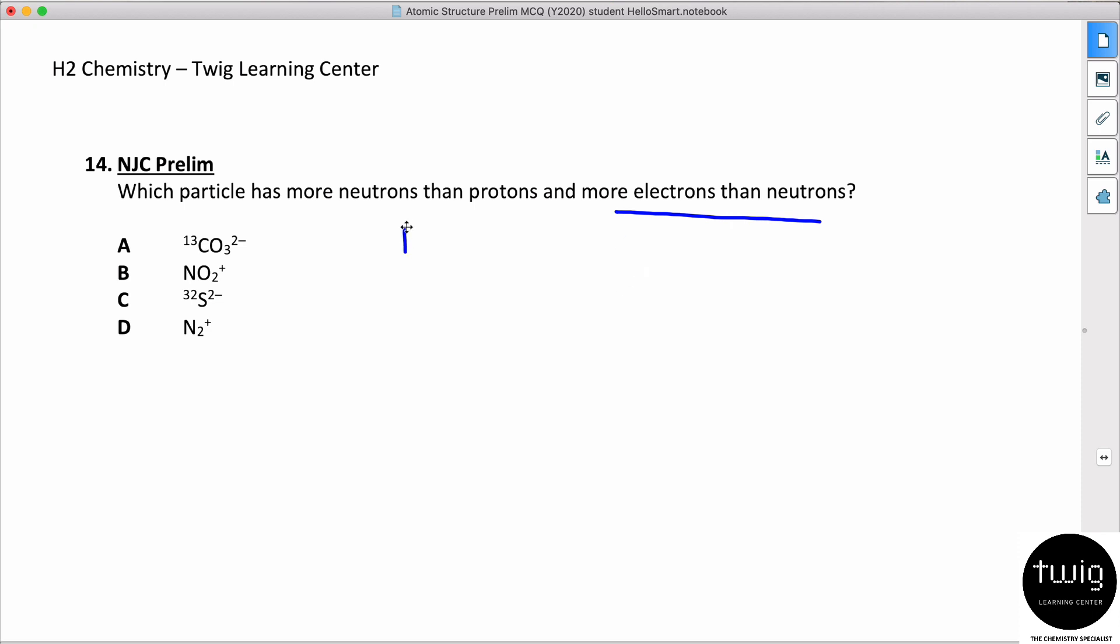So protons, neutrons, and electrons. This is what it looks like, carbon is like that.